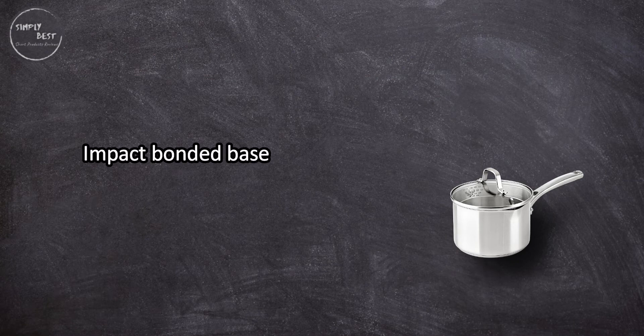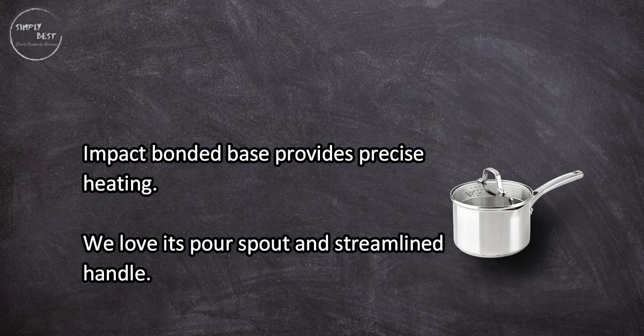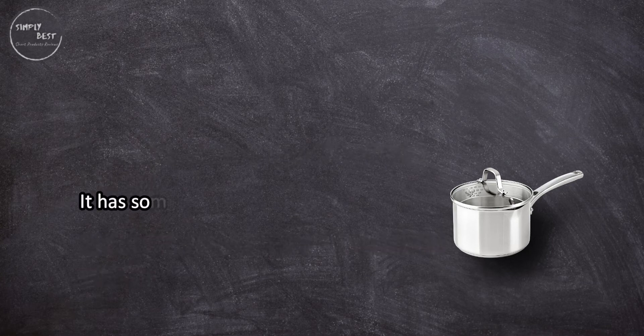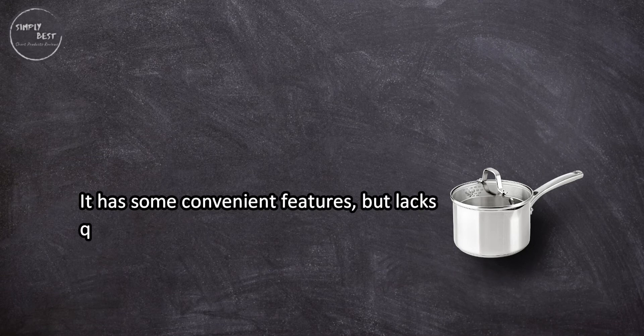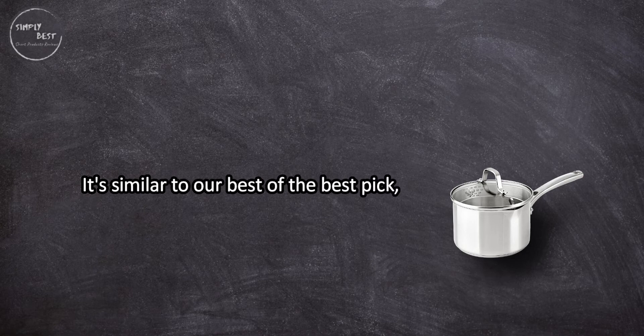At number two, Calphalon Classic Saucepan. Impact bonded base provides precise heating. We love its pour spout and streamlined handle. It has some convenient features but lacks quality compared to others on our list. It's similar to our best of the best pick but its construction doesn't seem as durable.